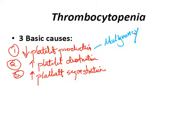Number three is increased platelet sequestration — platelets are retained in the spleen. Examples include hypersplenism, portal hypertension, and heart failure. That's how we get thrombocytopenic from sequestration.